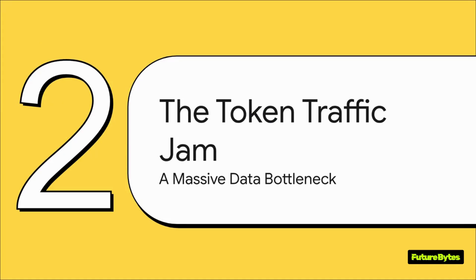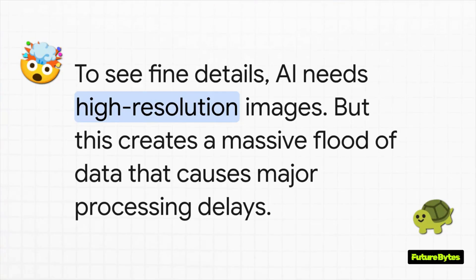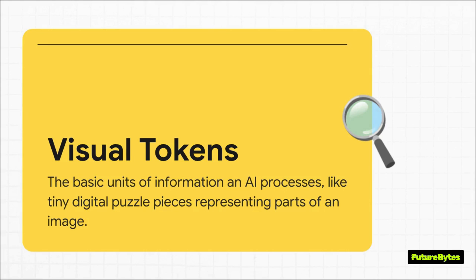So you might be thinking, if this tech is so powerful, what's the catch? Why haven't these amazing visual abilities been running smoothly on our phones and laptops this whole time? Well, the answer comes down to a massive data bottleneck. The core issue has always been resolution. For an AI to pick up on fine details, it needs a high-res image. But processing that super detailed image creates an enormous flood of information that the AI has to sort through, and that leads to some pretty major delays. This flood of information comes in the form of something called visual tokens — think of them as tiny digital puzzle pieces. The more detail you have in the picture, the more millions of puzzle pieces the AI has to sort through, creating a huge processing lag.